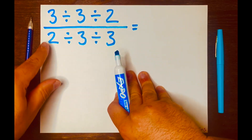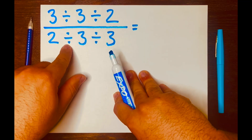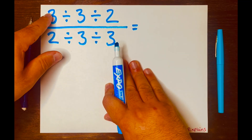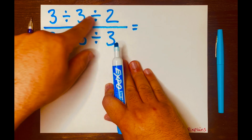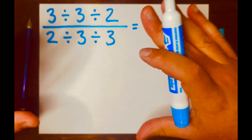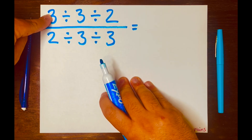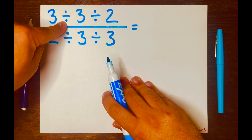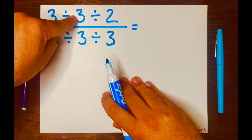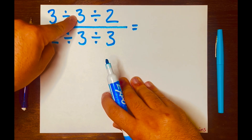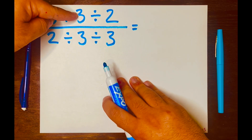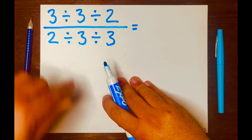Three divided by three, divided by two, divided by two, divided by three, divided by three. First things first, I'll turn these numbers into fractions. I'm using the keep-change-flip method, where I'll keep this number, then change this division symbol, and then lastly flip this fraction. It's three over one mentally, and then it'll be written as one over three.